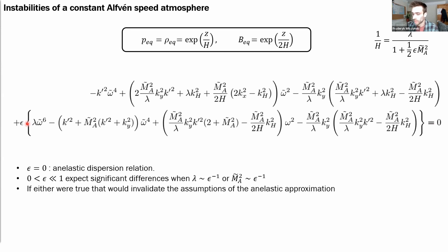And what turns out is when you set epsilon small here, then you get the dispersion relation for the anelastic system, which is just this top line.